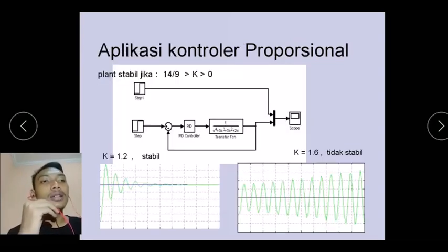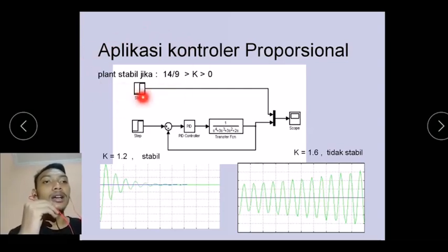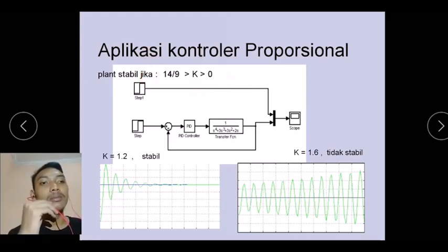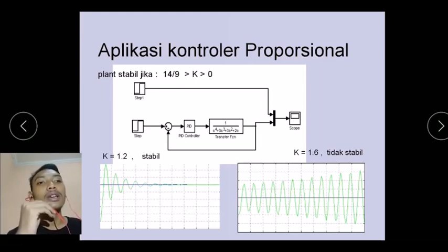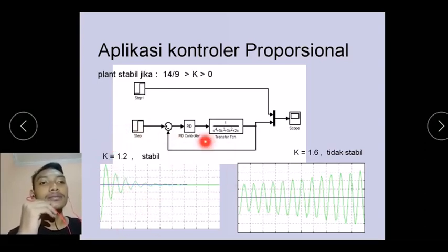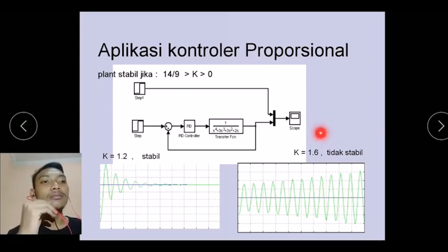Aplikasi controller proportional: plan stabil jika nilai K lebih kecil daripada 14/9 dan nilai K lebih besar daripada 0. Kita masukkan dua contoh: grafik pertama dengan nilai K=1,2 grafiknya stabil, sementara yang kedua dengan nilai K=1,6 grafik tidak stabil.